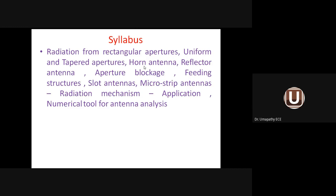We will also see horn antenna and reflector antenna. Under reflector antenna there are many types — flat reflector, corner reflector, and parasitic reflector antenna — as well as aperture blockage and feeding structure. There will be a primary antenna and a secondary antenna; combined they form the reflector antenna. Then comes slot antenna, which has a reflecting surface with a circular or rectangular slot. Microstrip antenna — also called patch antenna — is used in mobile phones and integrated into IC devices.